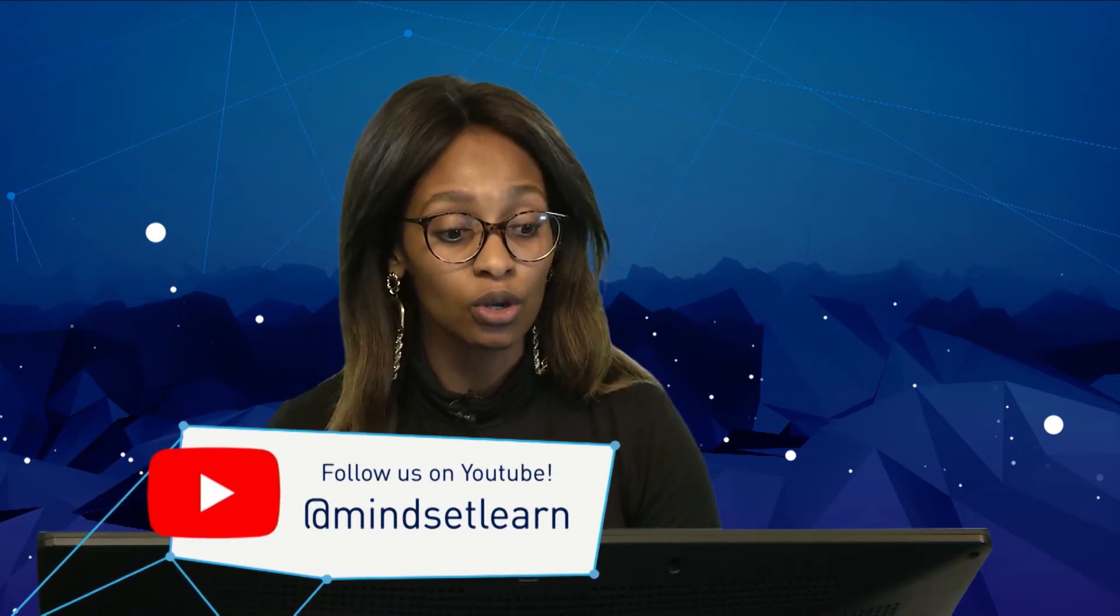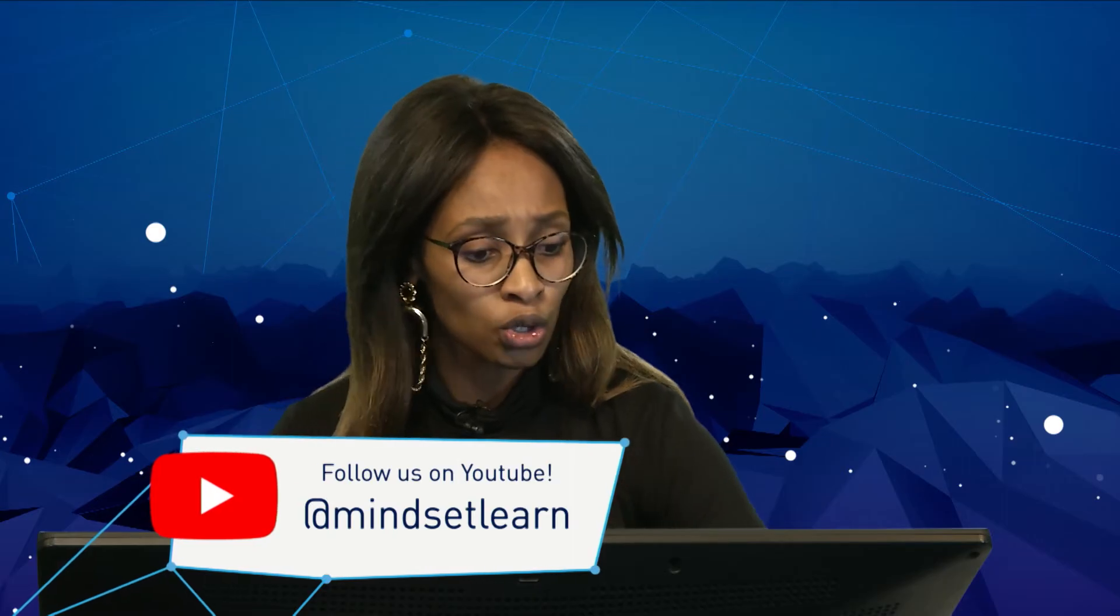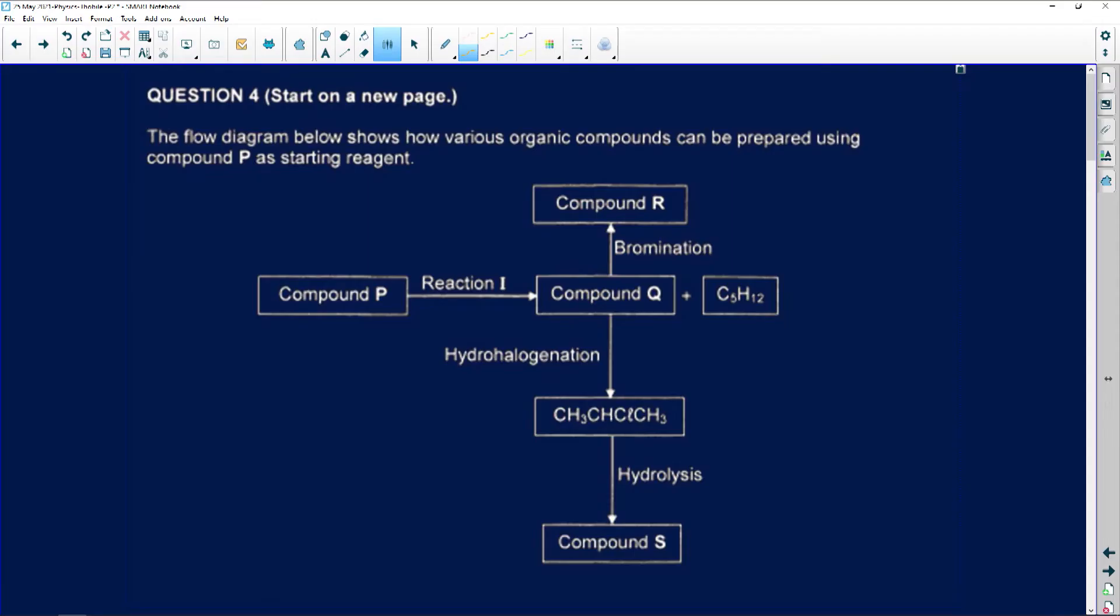Without wasting any more time, let's look at question number four, which is also organic chemistry. We're given a flow diagram below that shows how various organic compounds can be prepared using compound P as a starting reagent.